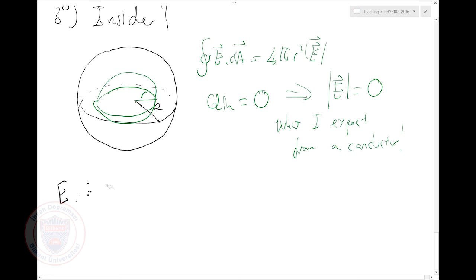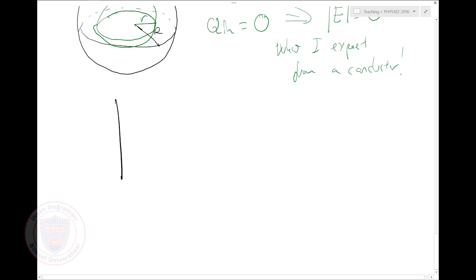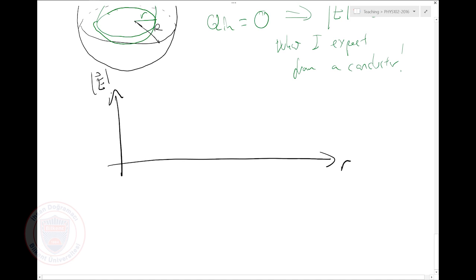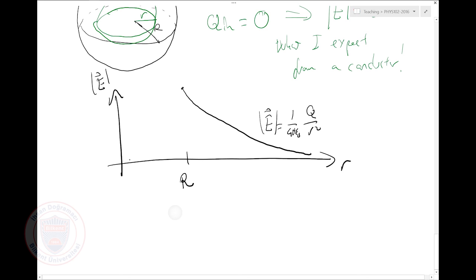Let me plot the electric field magnitude as a function of radius. Outside radius R, I have 1 over 4πε₀ times Q over r². Inside, the electric field is zero — so there is a jump in the electric field at the surface. We will see that if your electric field jumps, there must be a surface charge density — and that is exactly what we have on the sphere.